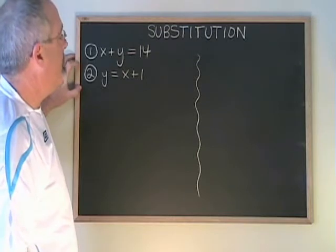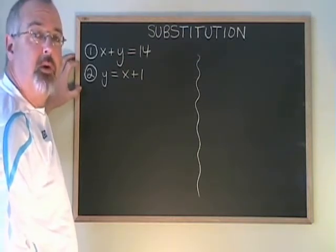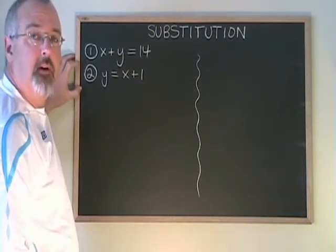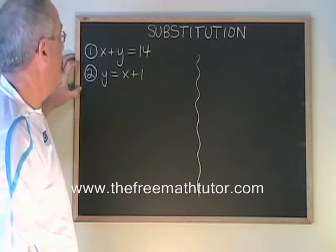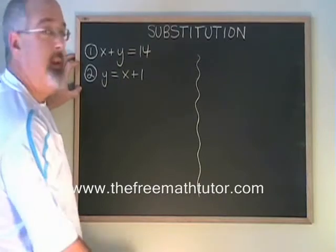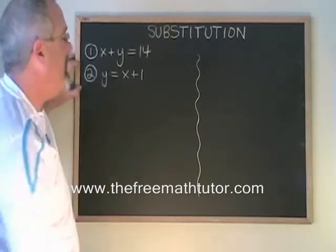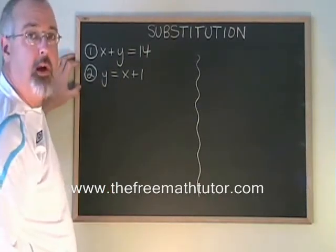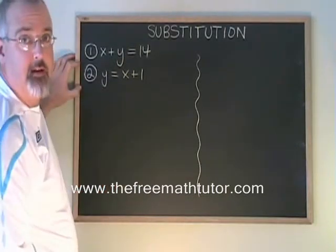In order for substitution to work, we have to isolate one of the variables in one of the equations. And this time we're lucky. In equation two, we have y equals x plus 1. The y is already isolated.